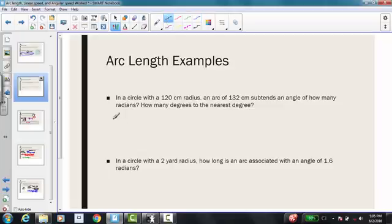So the first thing that we want to do is write down our given information. We're given a radius of 120 cm, and we're also given an arc length, which is represented by s, of 132 cm. And it's asking for our angle.